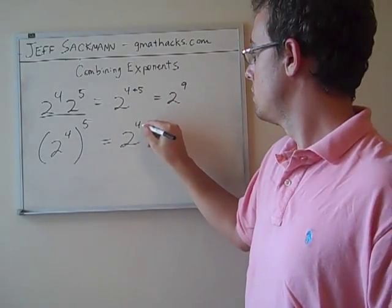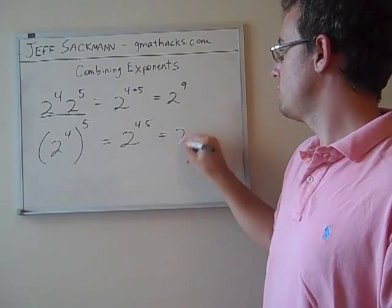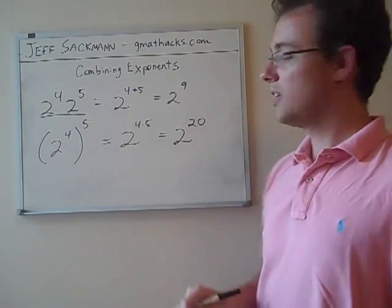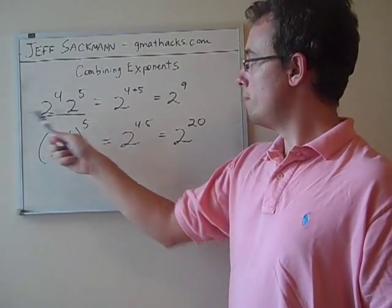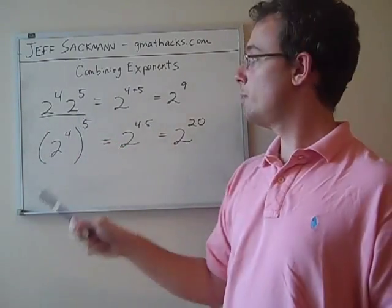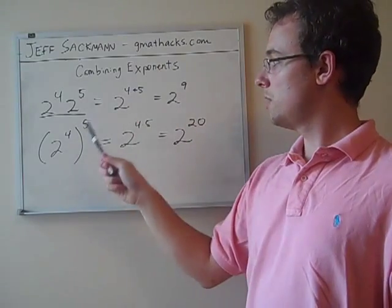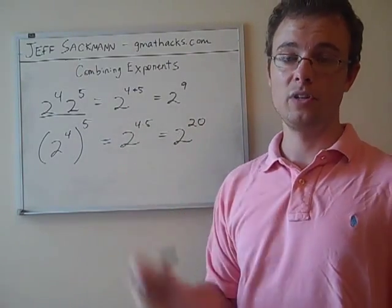A power to a power means the base stays the same, and you multiply the powers. Power to a power, multiply the powers. So in this case, 4 times 5 gives us 2 to the 20th. So quick recap, multiplying terms raised to different exponents, add the exponents. Power to a power, multiply the exponents.